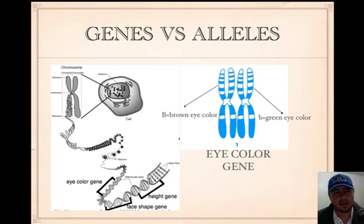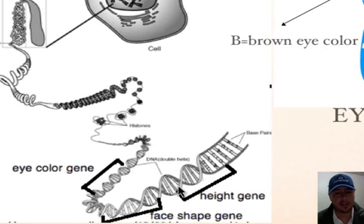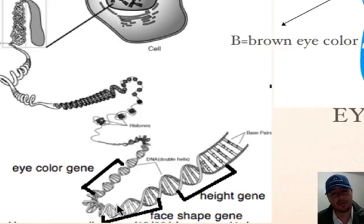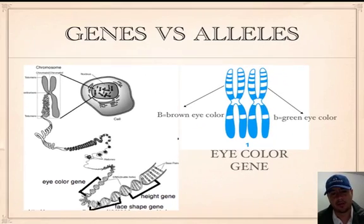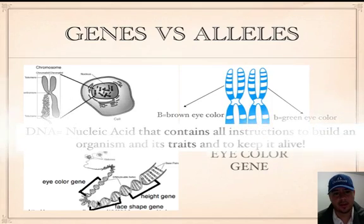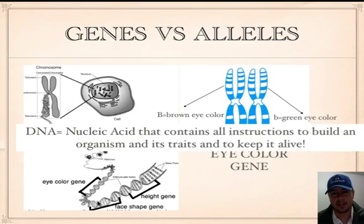Let's start with DNA. Here we have DNA — it's this molecule that has all our instructions for how to build our bodies, how to maintain them, and make sure they stay alive for us to reproduce. All this information is there, including our traits. DNA is a nucleic acid that contains all instructions to build an organism and its traits and to keep you alive.